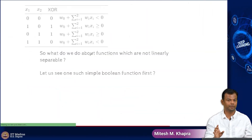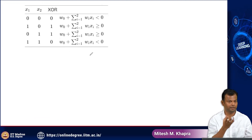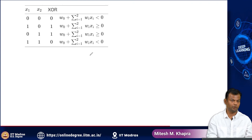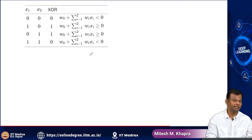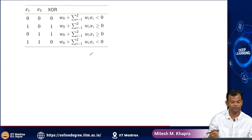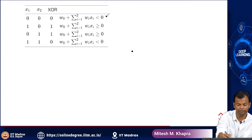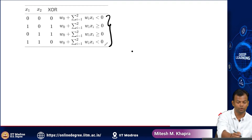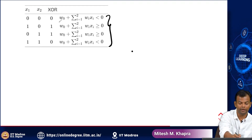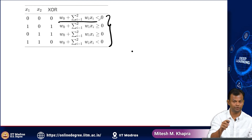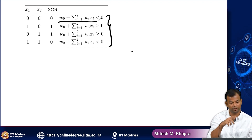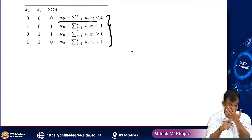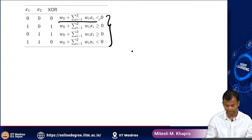Let us see one such simple example — the famous XOR function. This is what the XOR function looks like. If I want to implement this using a perceptron, these are the 4 inequalities that my weights should satisfy. For 0,0 inputs, the output should be less than 0; for 0,1 it should be greater than or equal to 0; for 1,0 greater than or equal to 0; and for 1,1 again less than 0.